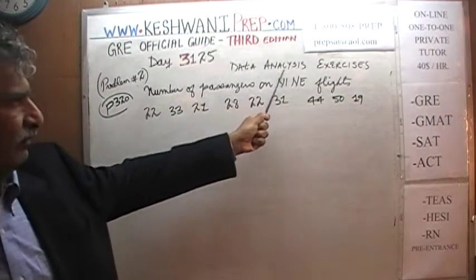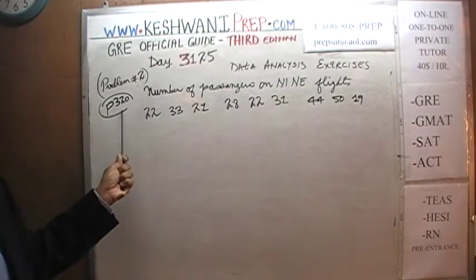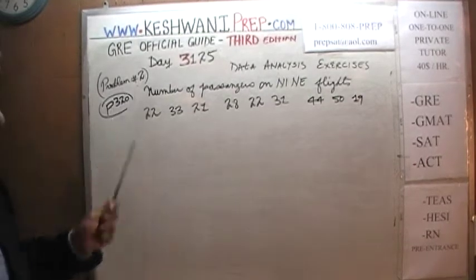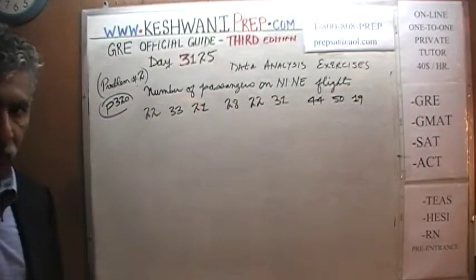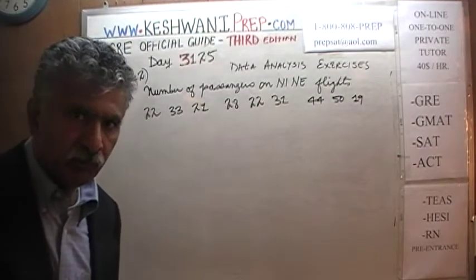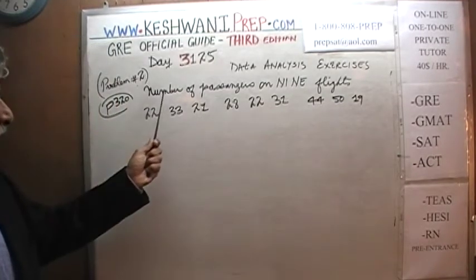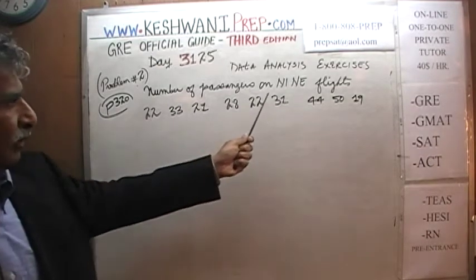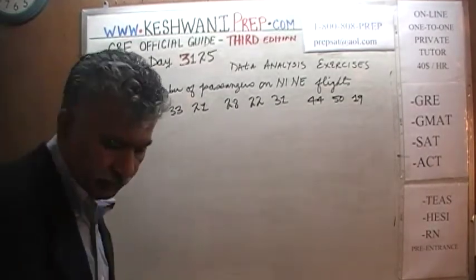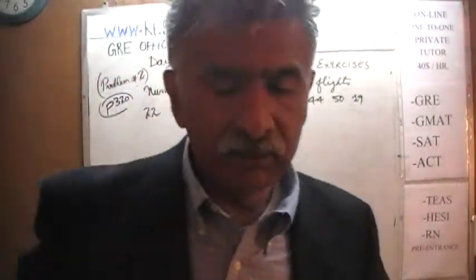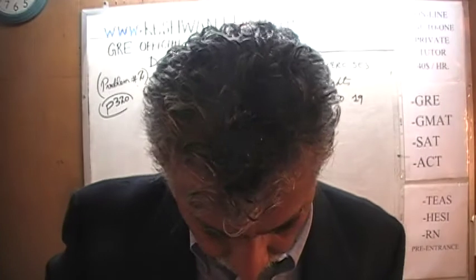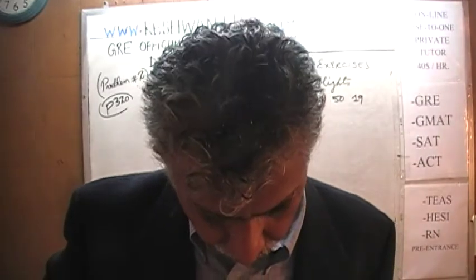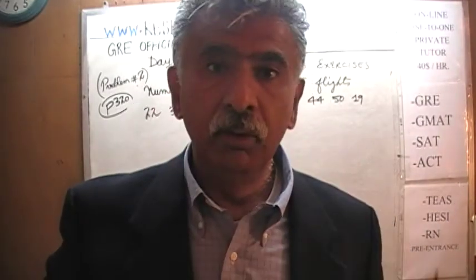We are in the process of solving data analysis exercises on page three twenty, and today we'll do problem number two. The problem is already on the blackboard — make sure the book is in front of you and turn to page three twenty. It says the number of passengers on nine flights is as follows, and they simply want us to find the mean, median, mode, range, and interquartile range of these nine observations.